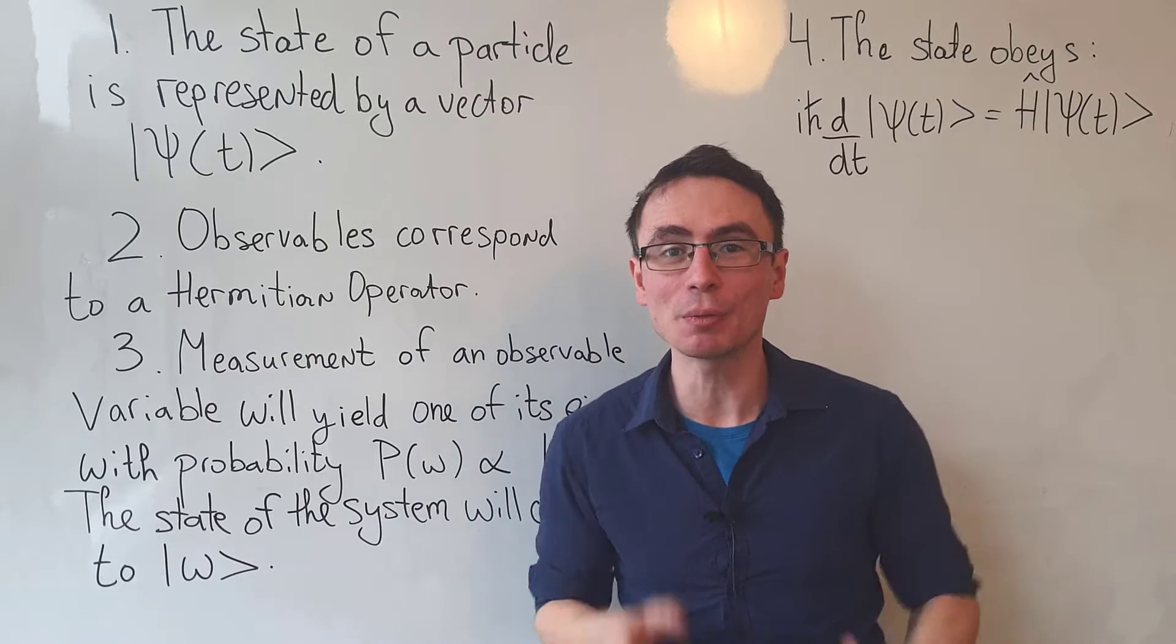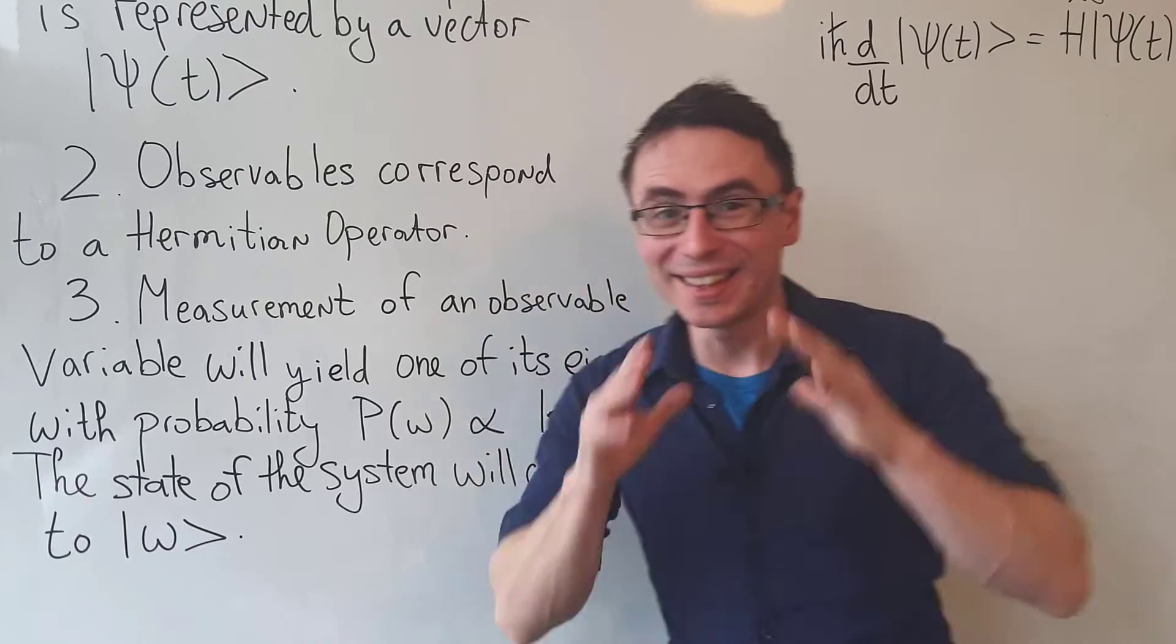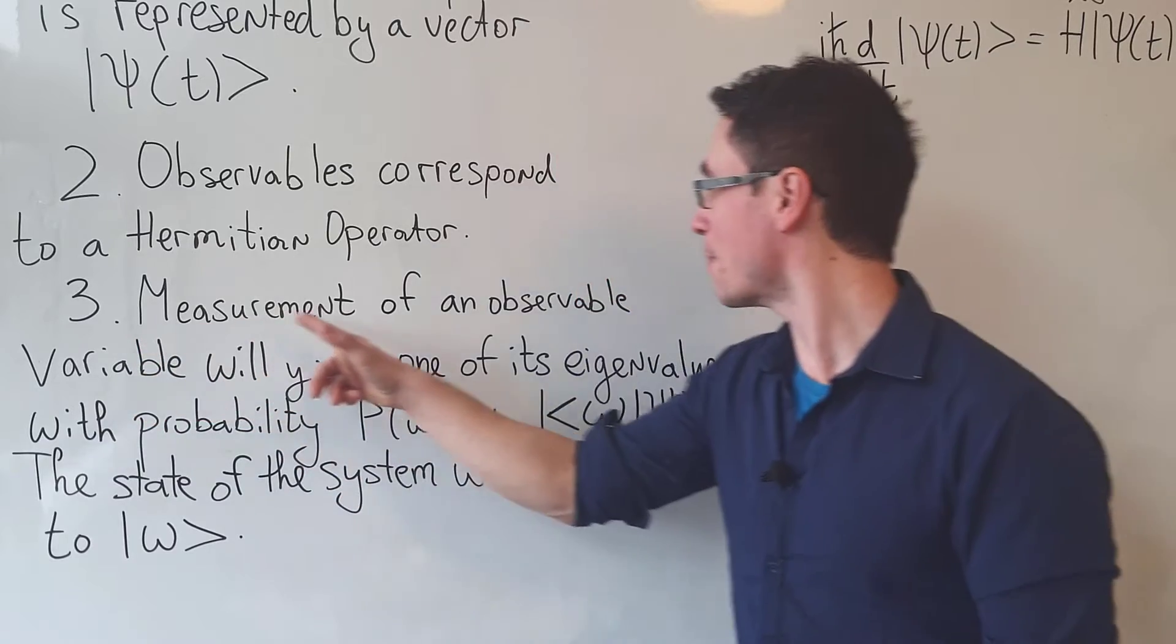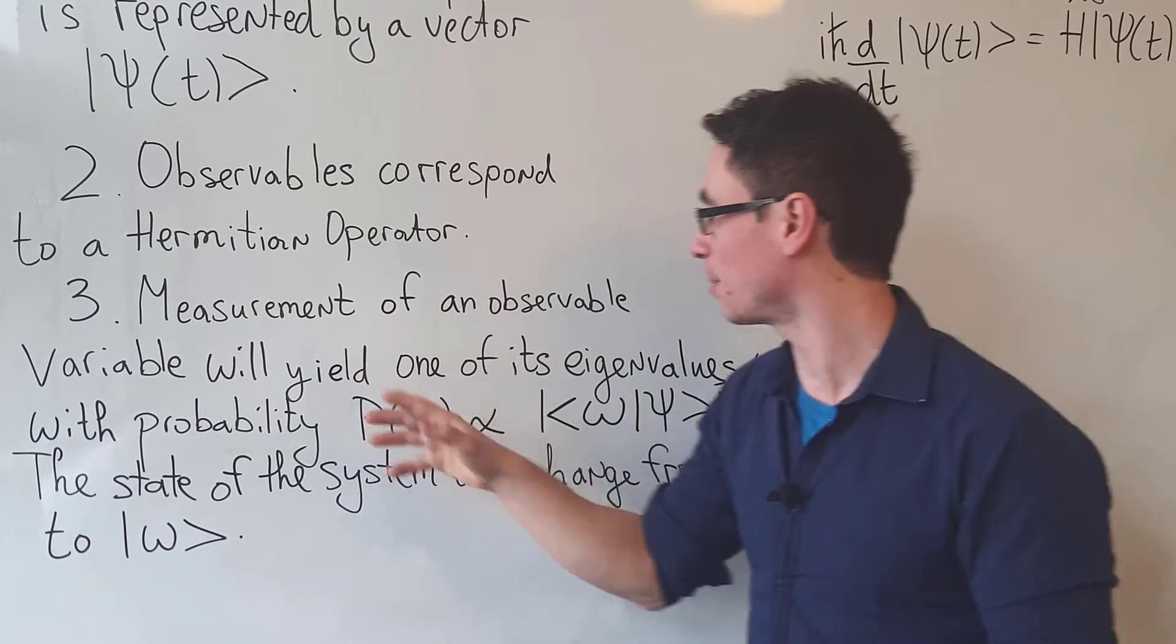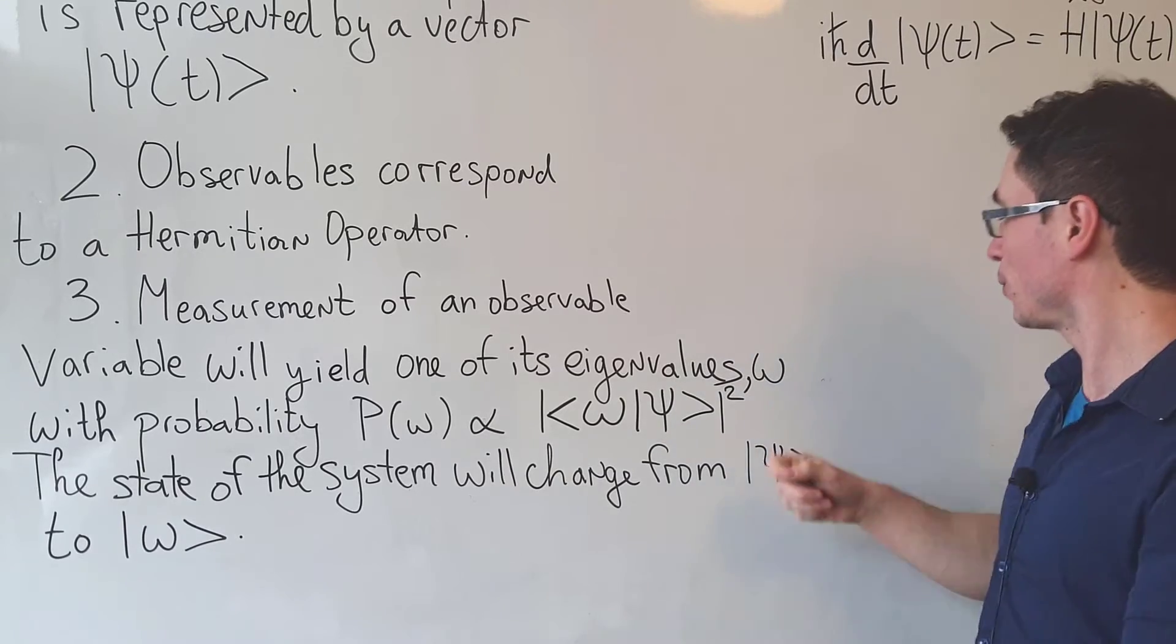It is a special type of operator which will only produce real values. And this leads us to probably my favorite postulate, the third one: the measurement of an observable variable will yield one of its eigenvalues.